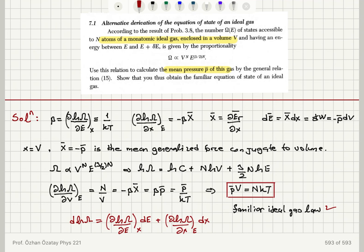And, therefore, we obtain using del ln omega del V equals minus beta x bar, what we have derived in this chapter. And minus x bar is p bar, the pressure of the gas. Therefore, we obtain p bar V is equal to N kT, the ideal gas law.